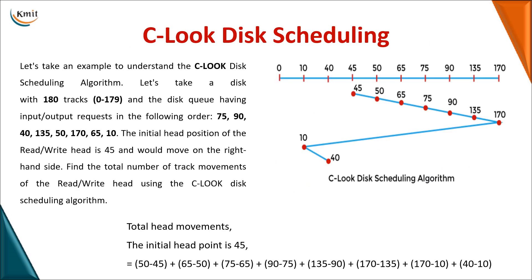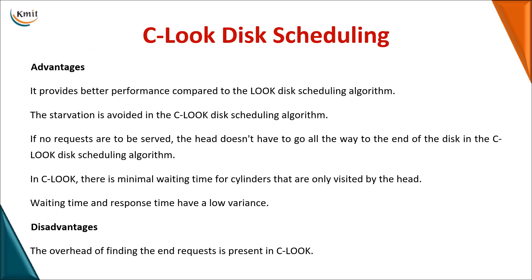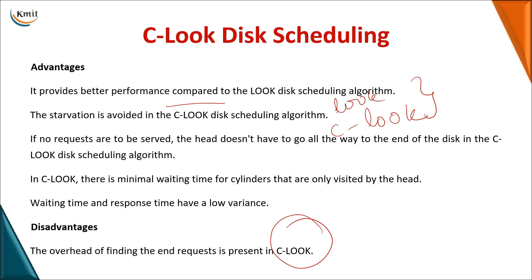The C-LOOK disk scheduling algorithm is to LOOK what C-SCAN is to SCAN. When coming back after reaching the end of the requests, C-LOOK does not service any requests during the return — just like C-SCAN. Additionally, the head does not go beyond the last request. So you traverse in one direction, reach the end of the requests (e.g., track 170), then return to the beginning and service the remaining values. The key challenge for both LOOK and C-LOOK is identifying where the last request is.